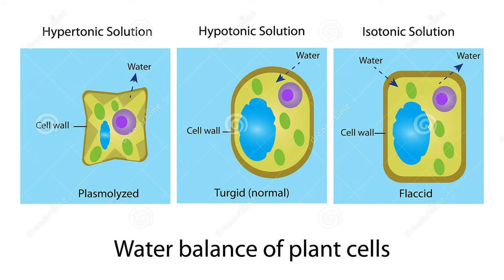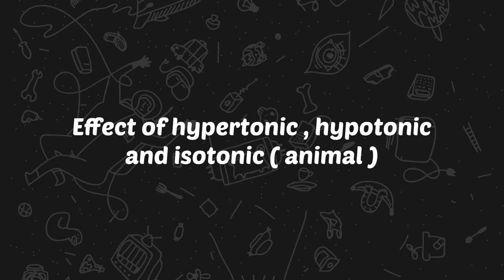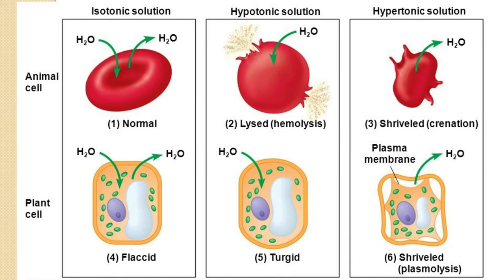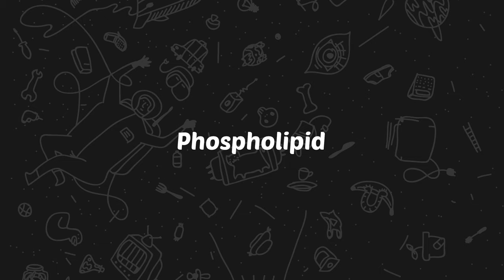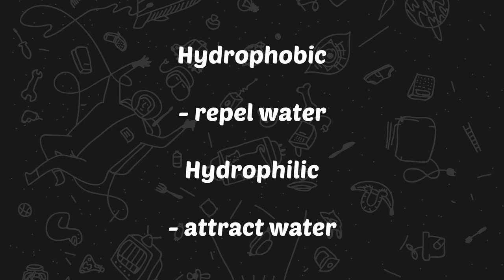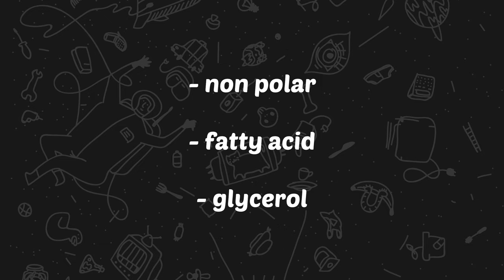How about the effect on animal cells? For isotonic, it will stay normal. For hypotonic, it will lyse. For hypertonic, it will undergo crenation. Now let's talk about phospholipids. We have the hydrophobic part, which repels water, and the hydrophilic part, which attracts water. The hydrophobic part consists of non-polar fatty acids and glycerol.